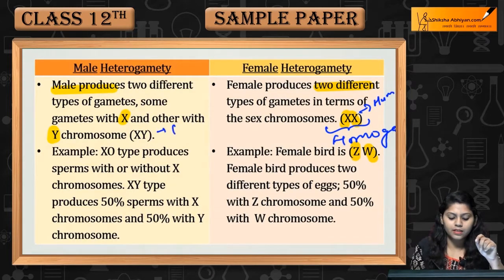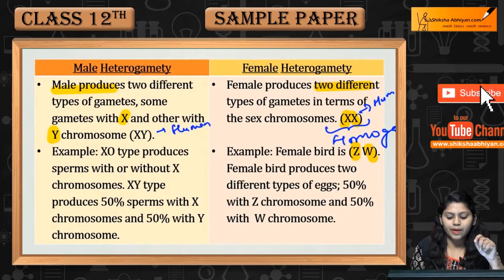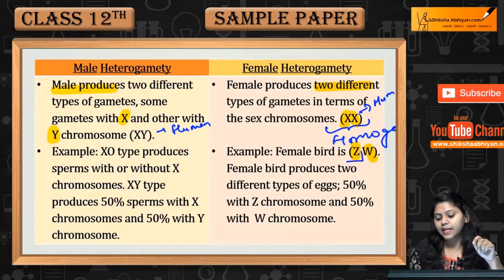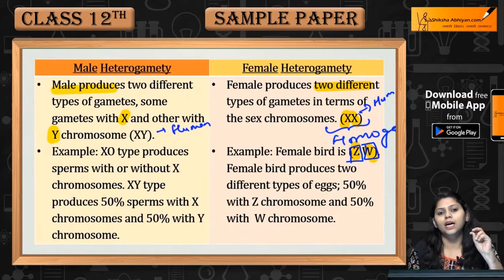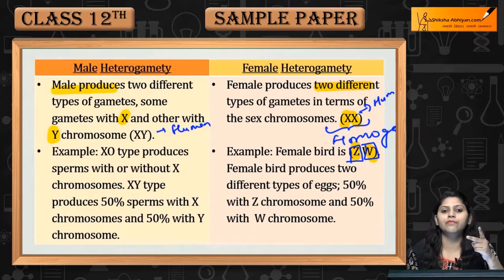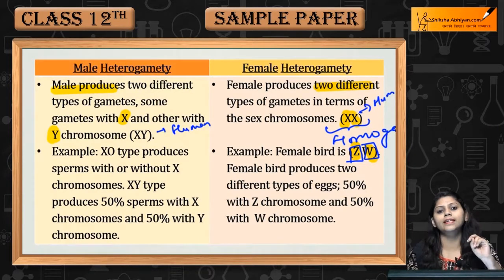This is the human male case. And in the case of birds, it is Z and W. If Z and W are present, this means two different types are present — so this is heterogamety.